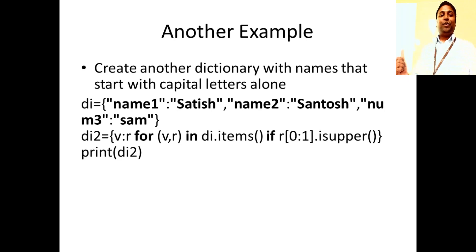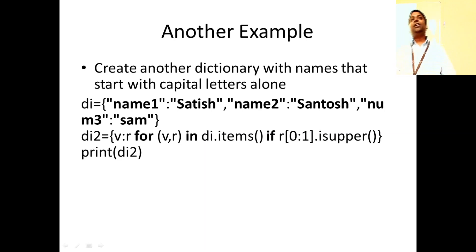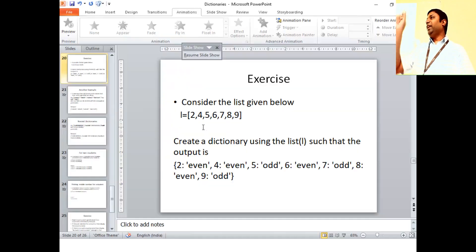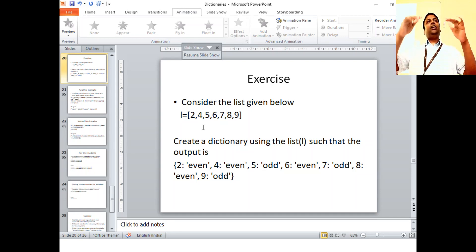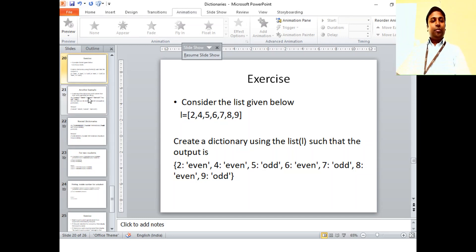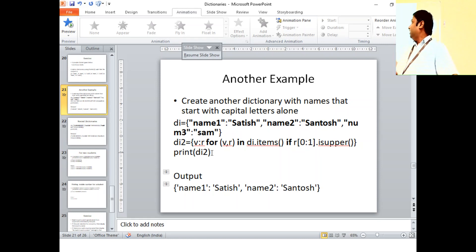Another example: create another dictionary with names that start with capital letters only. Say I have a dictionary with some names — some start with small letters and some with capital letters. The task is to create a dictionary containing only names that start with a capital letter. For example: name1: 'Satish', name2: 'Ramesh', name3: 'sam' — the output should include only Satish and Ramesh, skipping sam.